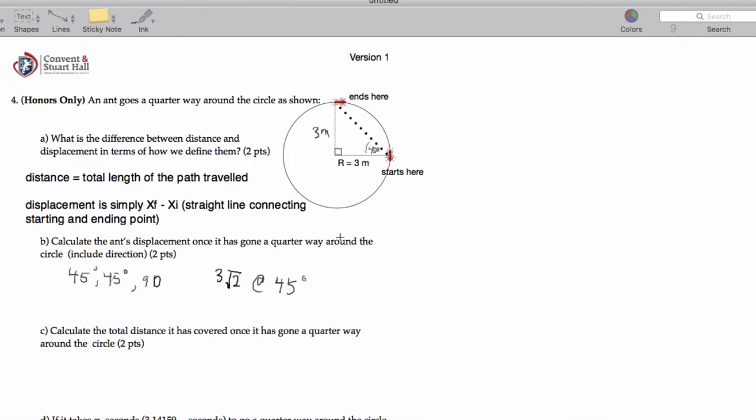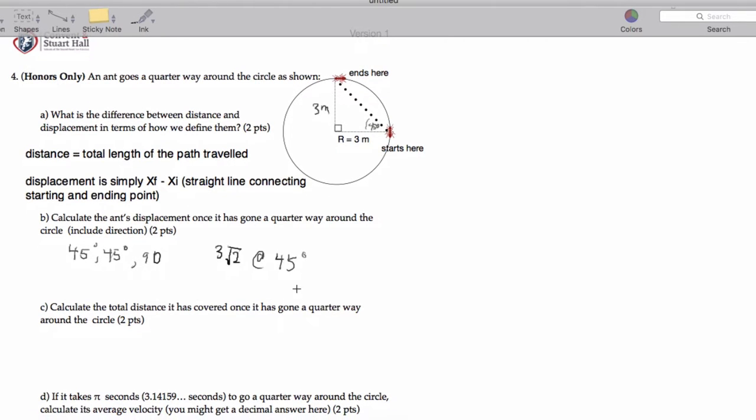Now, it says calculate the total distance that it has covered once it's gone a quarter way around the circle. So I need one-fourth of the circumference to get the distance. So that's going to be 2 pi times 3 divided by 4. So I would write this as 3 pi over 2 meters. Let's actually keep it that simple.